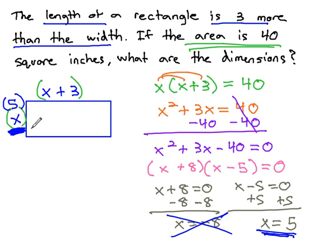So, plugging five in for x, we've got a width of five, and the other one is x plus three, or five plus three, which equals eight. We have a five by eight rectangle.